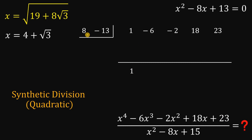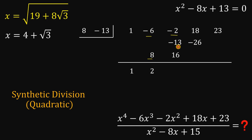Bring down 1. Then 1 times 8 gives 8 — place it in position — and 1 times negative 13 gives negative 13, placed on top. Negative 6 plus 8 is positive 2. Then 2 times 8 is 16, and 2 times negative 13 is negative 26. Adding: negative 2 plus negative 13 plus 16 gives 1. Then 1 times 8 is 8, and 1 times negative 13 is negative 13. Adding: 18 plus negative 26 is negative 8, plus 8 is 0. And 23 minus 13 is 10.